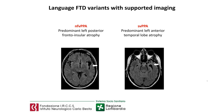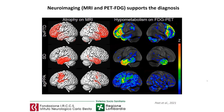The non-fluent variant is characterized by agrammatism and apraxia of speech. The semantic variant is characterized by loss of comprehension and difficulty in naming objects. The language variants can also be supported by neuroimaging: the non-fluent variant has a predominant left posterior fronto-insular atrophy, and the semantic variant has a predominant left anterior temporal lobe atrophy. Neuroimaging — particularly MRI — is really important for diagnosis, showing different patterns of atrophy, with reduced metabolism in the corresponding regions.